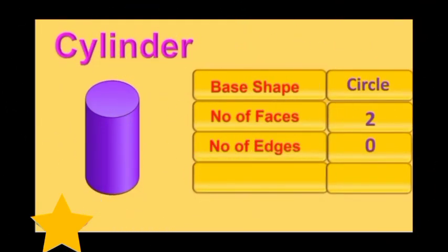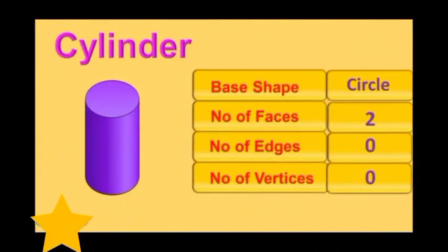Cylinder. Base shape: circle. Number of faces: 2. Number of edges: 0. Number of vertices: 0.